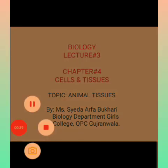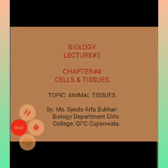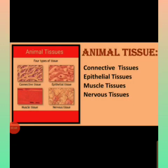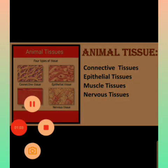There are four different kinds of tissues present in the bodies of animals: number one is connective tissue, number two is epithelial tissue, number three is muscle tissue, and number four is nervous tissue. In today's lecture we will discuss two of the types: number one will be epithelial tissue and number two will be connective tissue.